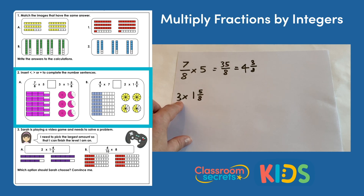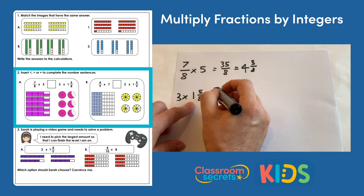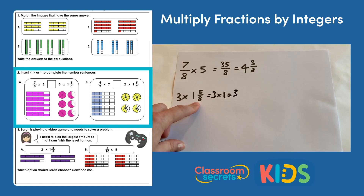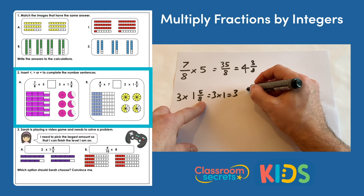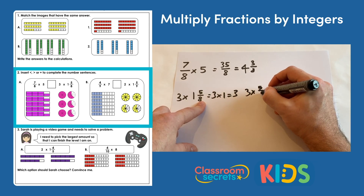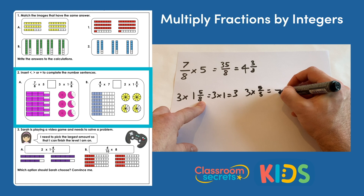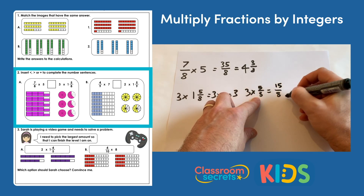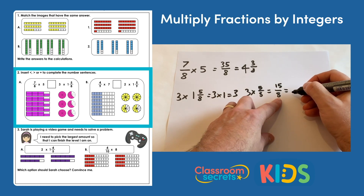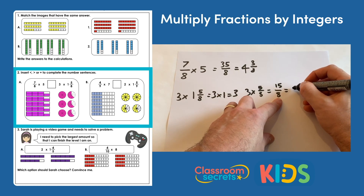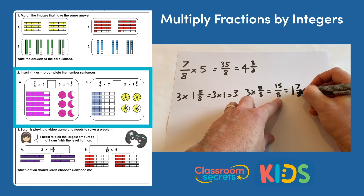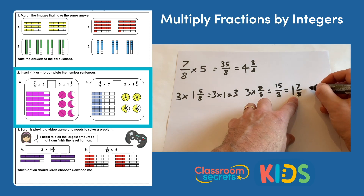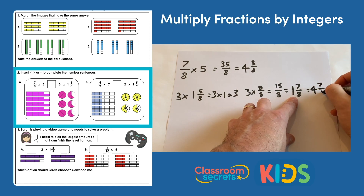For three multiplied by one and five eighths, we multiply the whole numbers first: three multiplied by one is three. Then multiply the fraction: three lots of five eighths, so three multiplied by five is fifteen eighths. Fifteen eighths converts to one and seven eighths. Adding to the whole number result: three add one and seven eighths gives four and seven eighths.